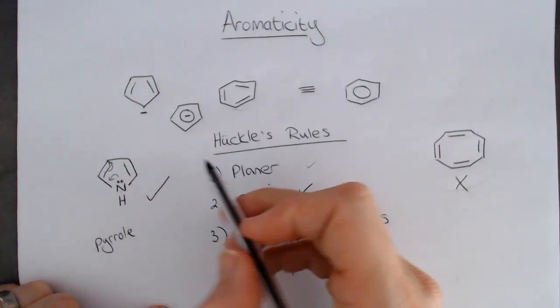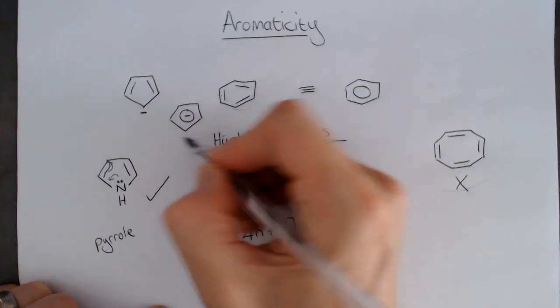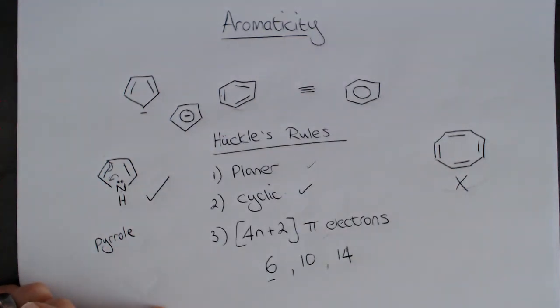And it's often sometimes drawn like this, with that circle to show it's aromatic, and overall there's a negative charge on it. It's actually very stable and an important ligand in inorganic chemistry.